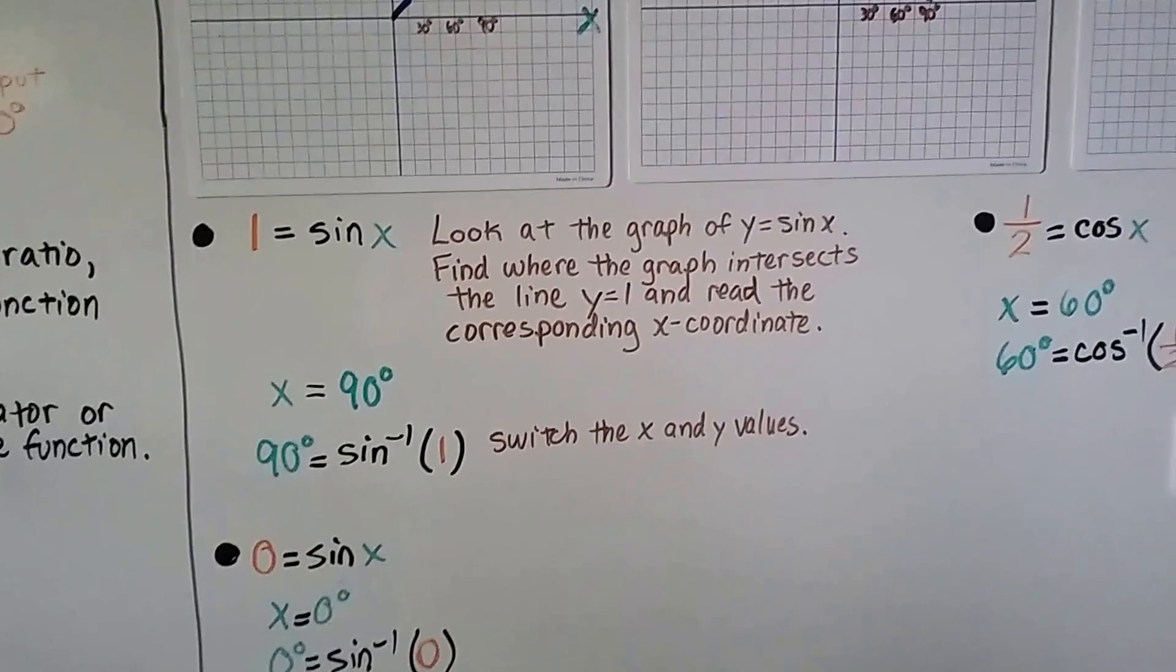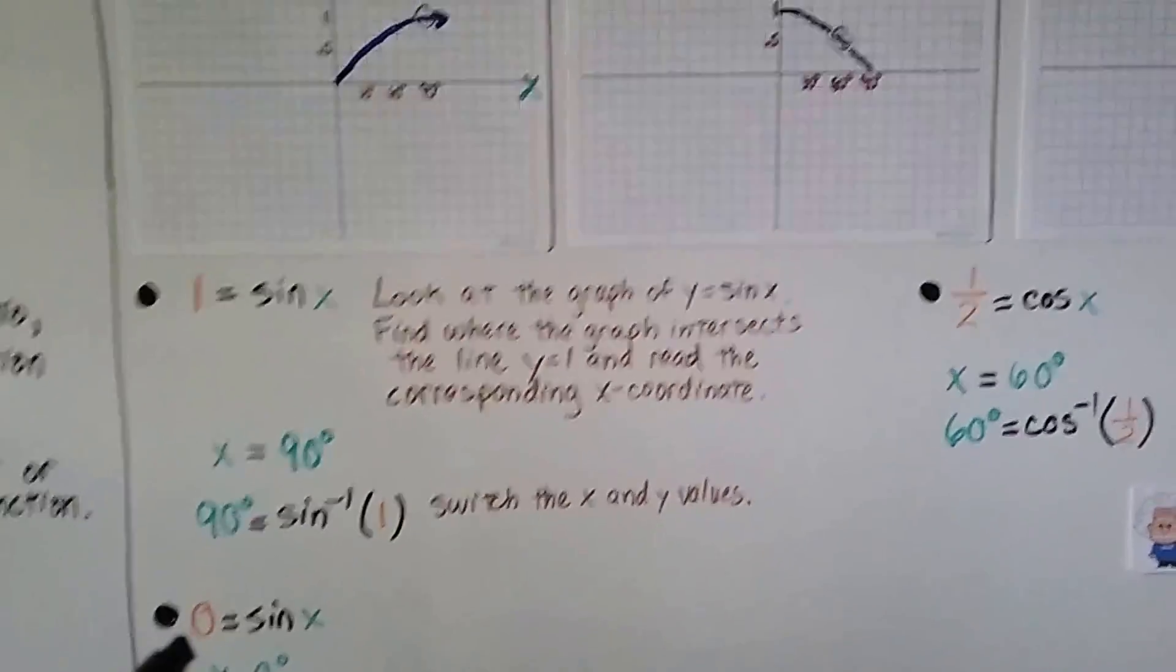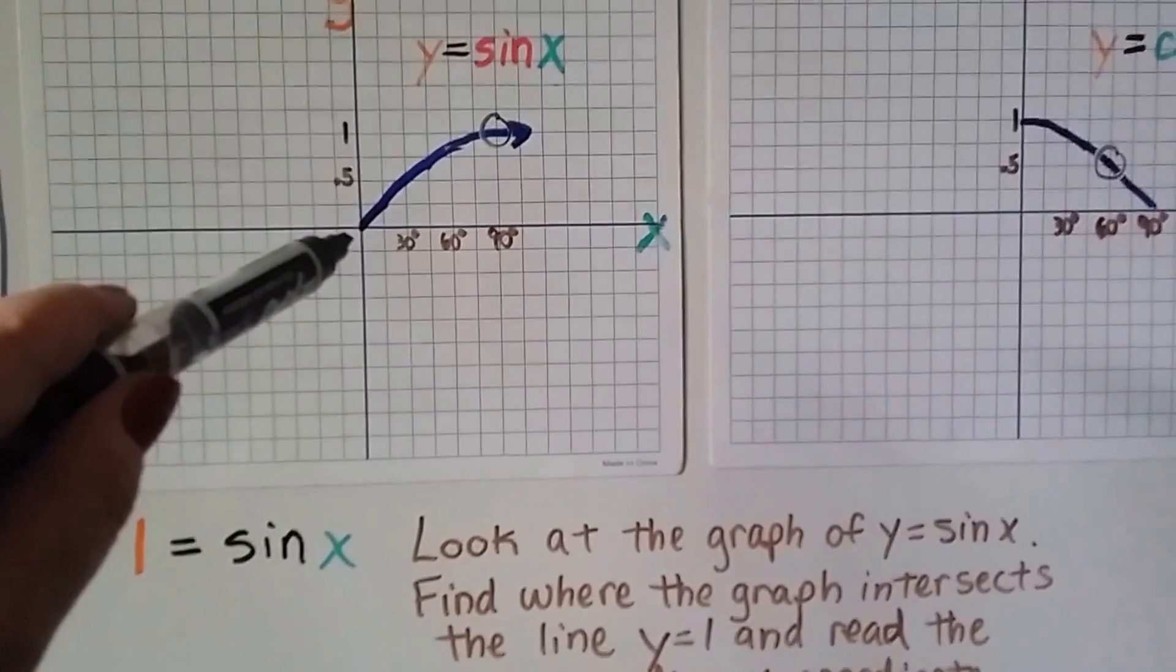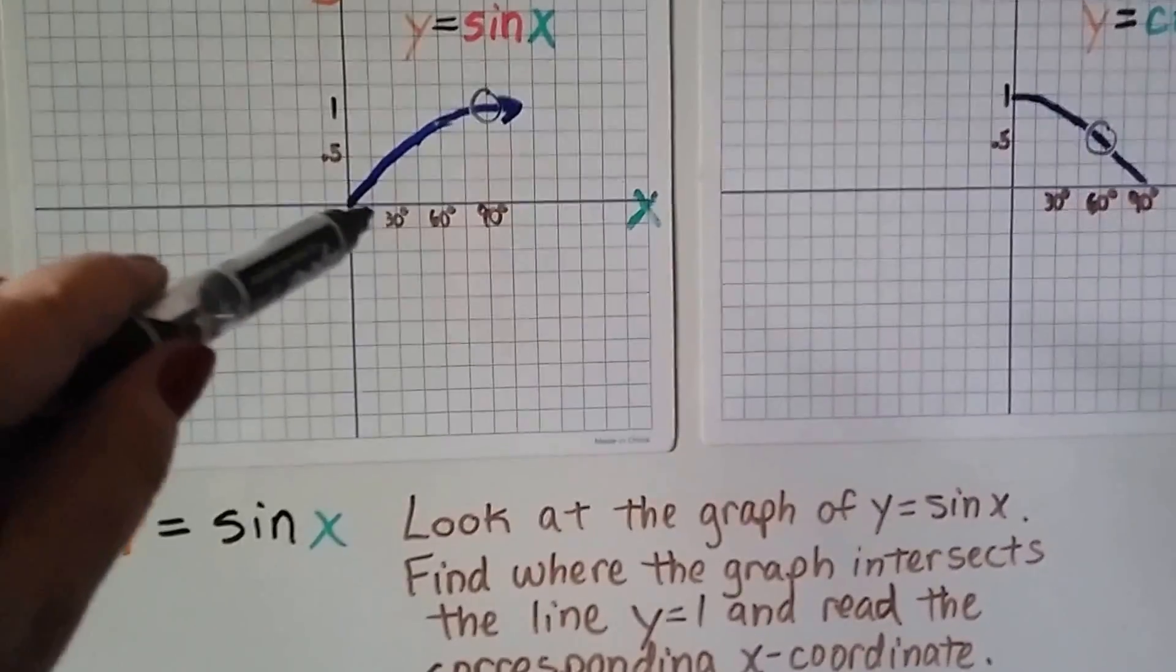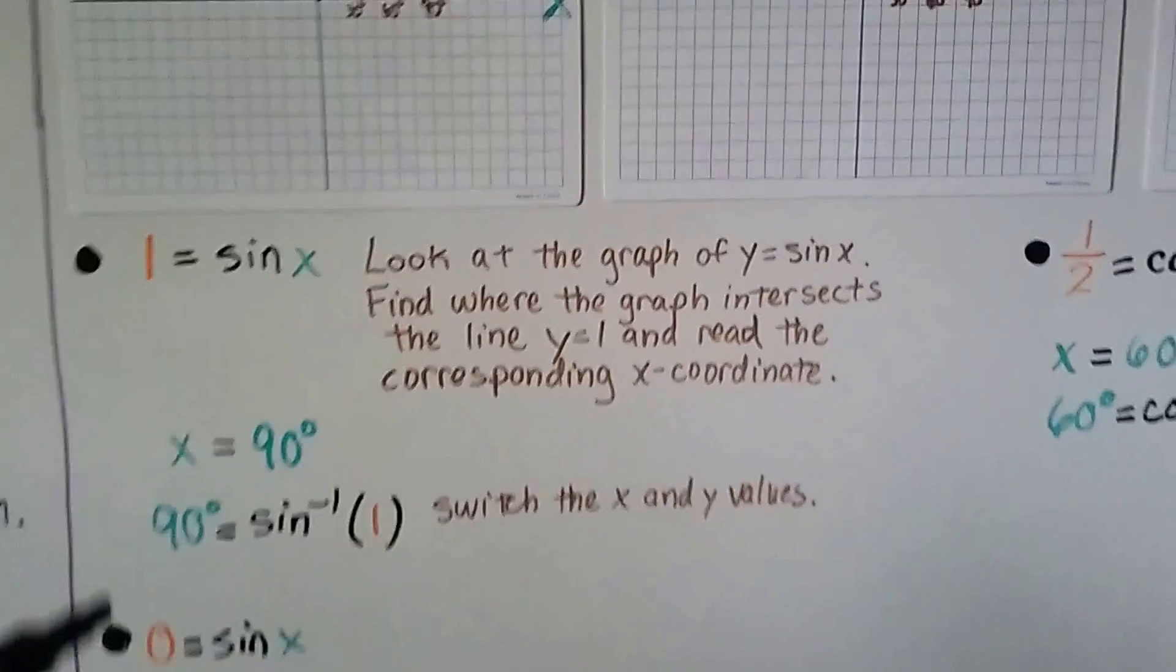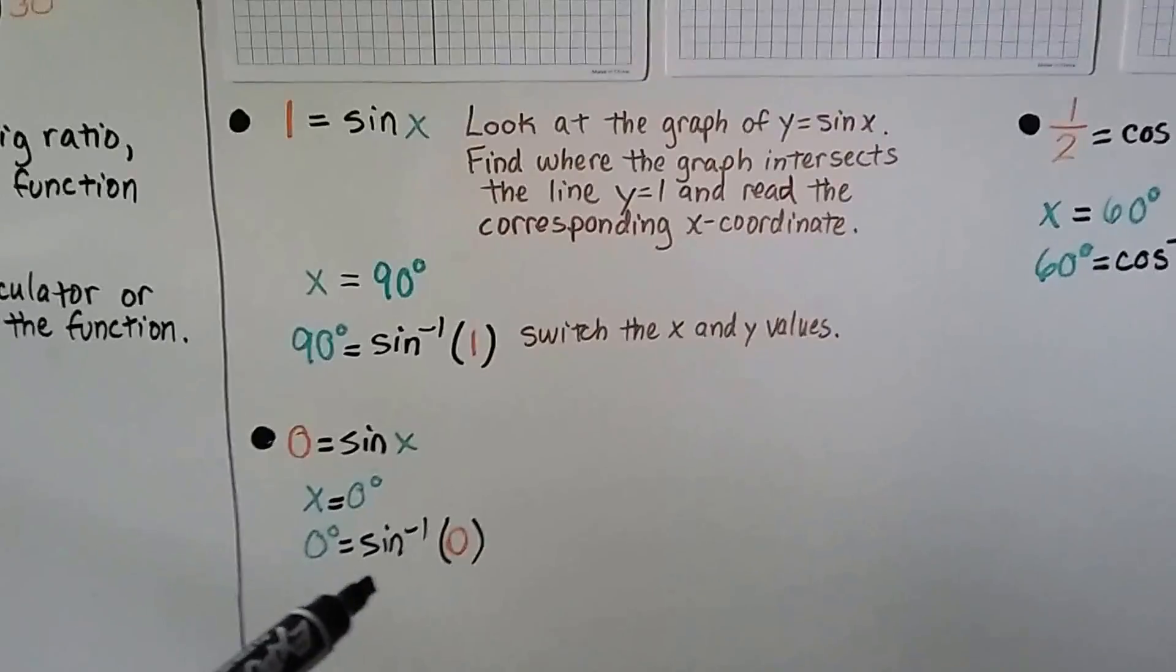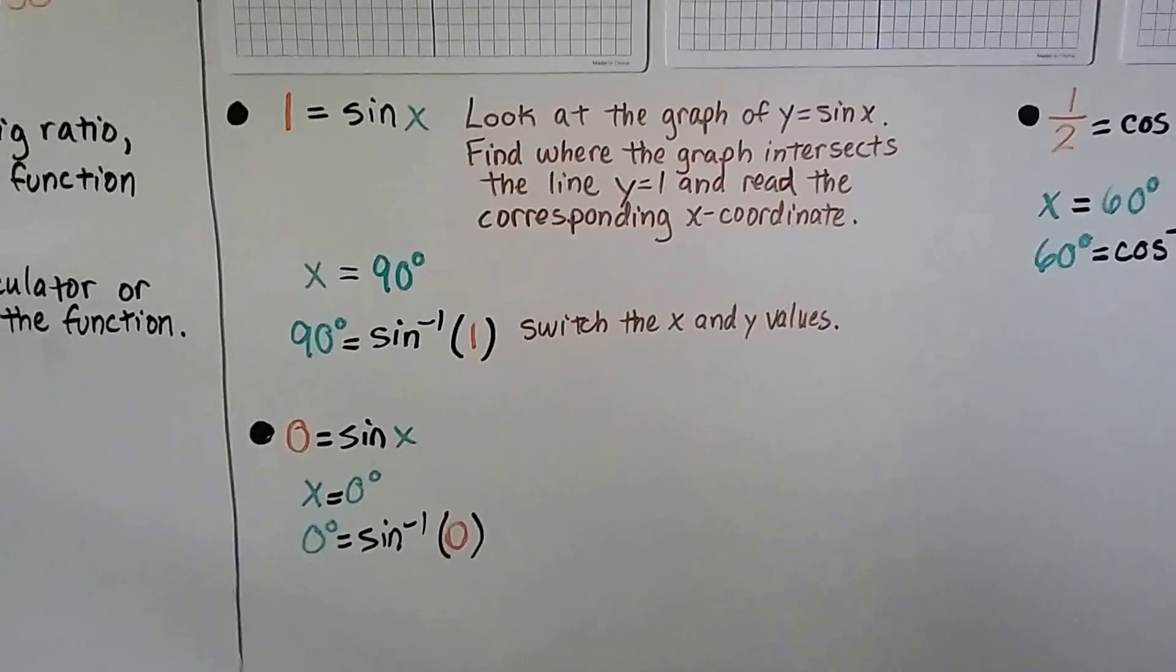For 0 equals the sine of x, we look at where y is at 0. It's right here at the origin. And that means x is at 0, too. So, we have x equals 0 degrees. 0 degrees equals the inverse sine of 0.